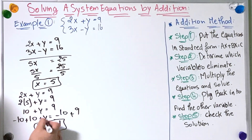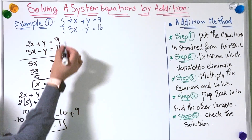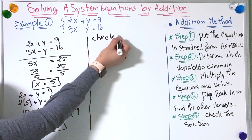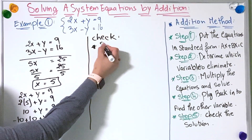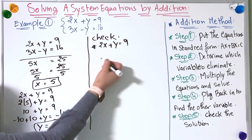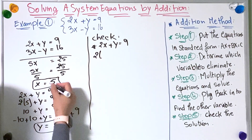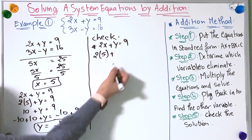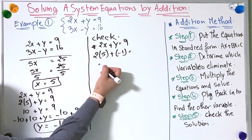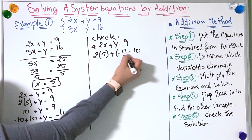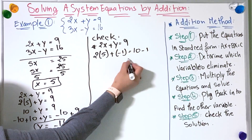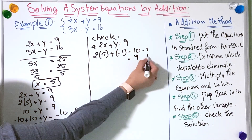Now that we have both solutions we're going to check them in both equations. Taking the first equation: 2x plus y equals 9. Replacing x and y with the solutions: 2 multiplied by 5 plus minus 1. That gives 10 minus 1, which equals 9. This is true.